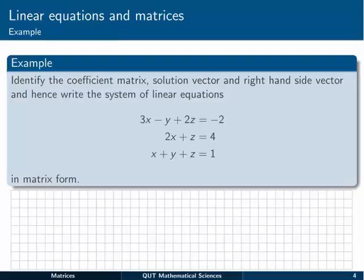Let's have a look at an example. Here we're given three equations in three unknowns, and we're asked to identify the coefficient matrix, solution vector, and right-hand side vector for these equations, and then write them in matrix form. What we can note is that the three equations are already written with x, y, and z — the variables — all on the left-hand side. Everything on the right-hand side is a constant that has nothing to do with x, y, and z. So we can easily pick off the pieces that we need.